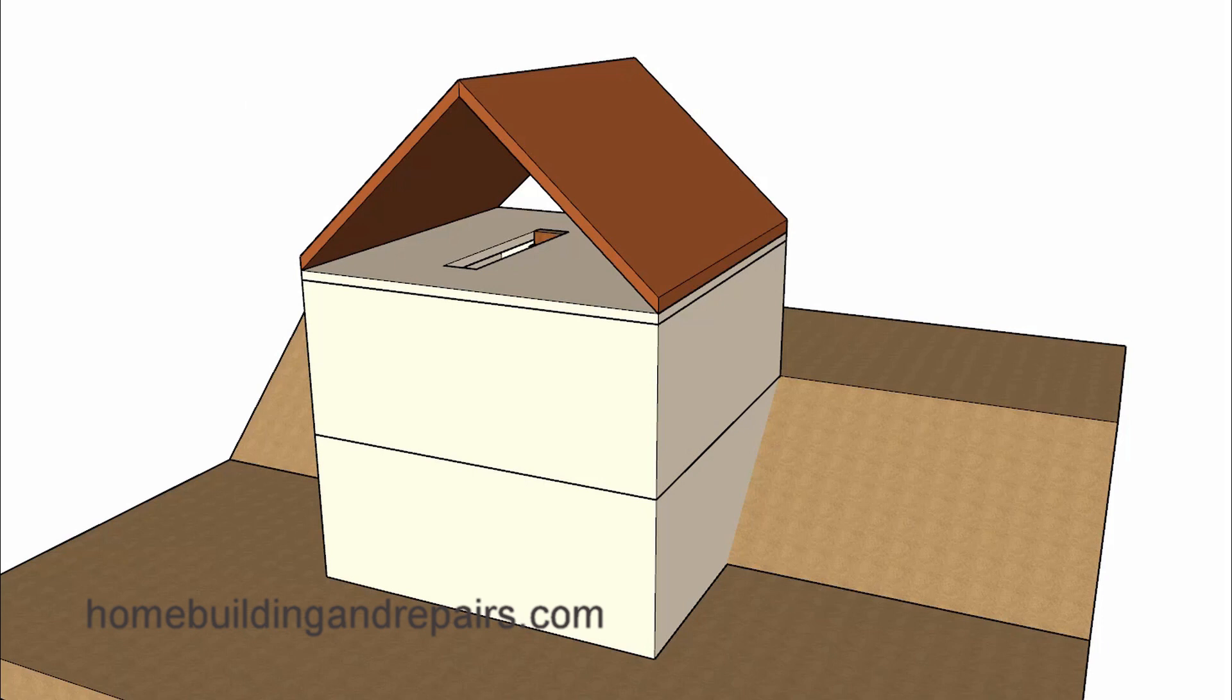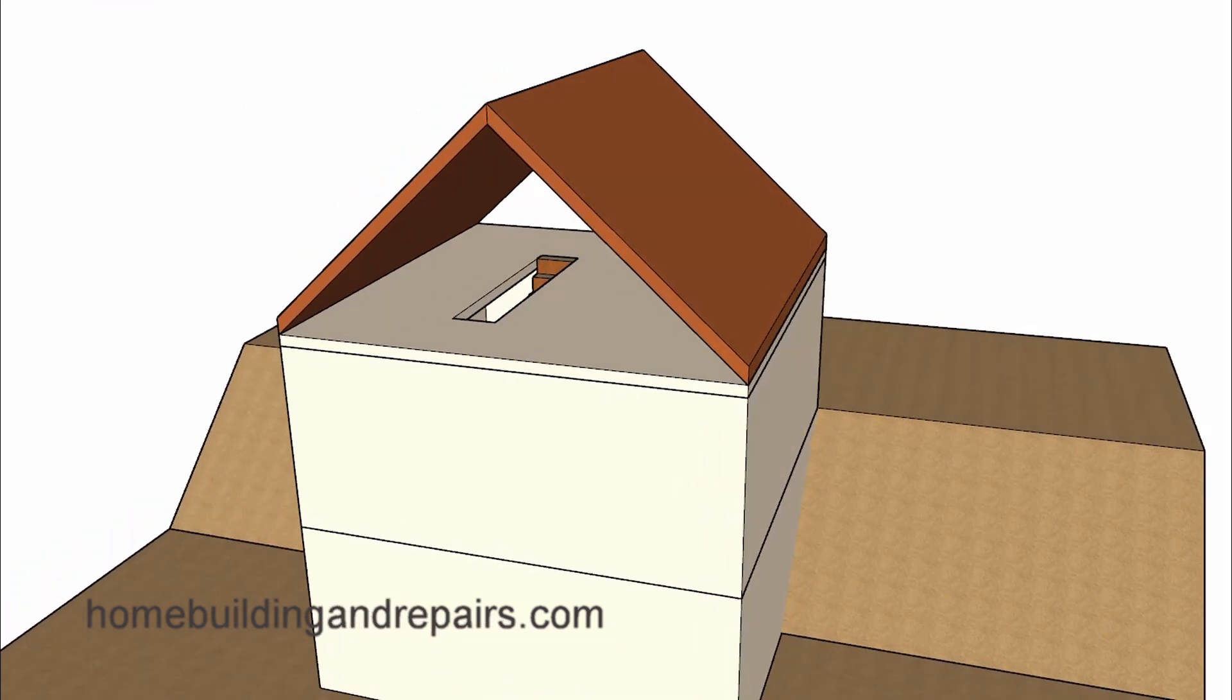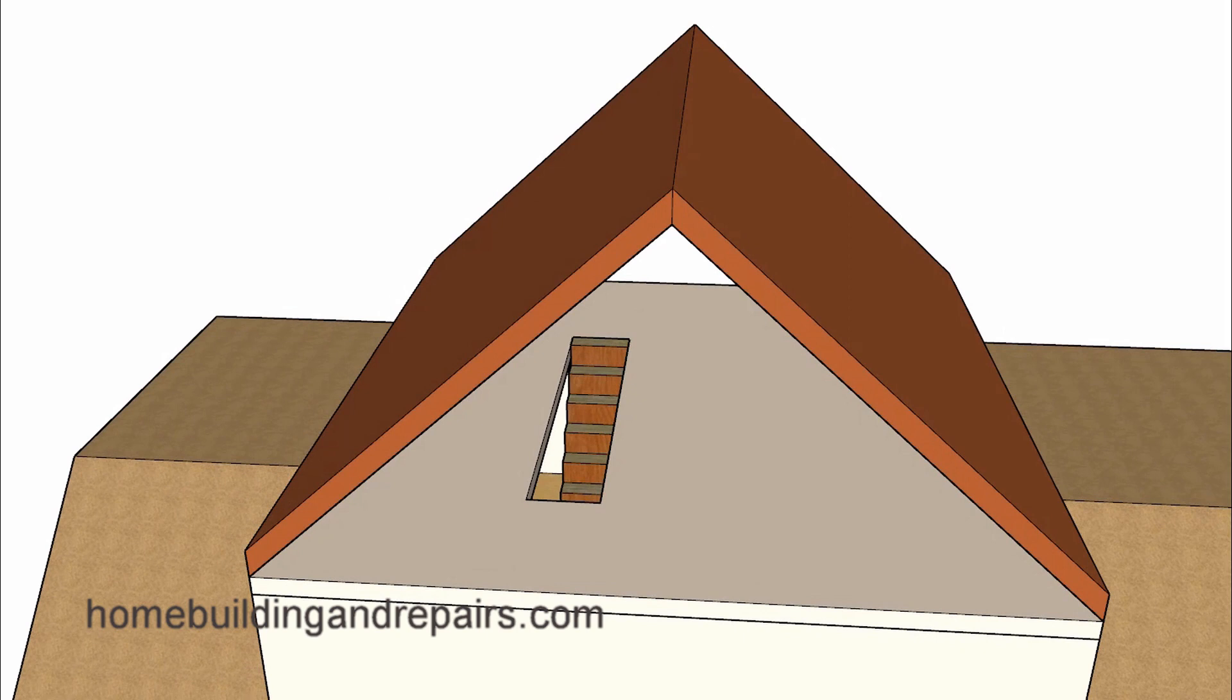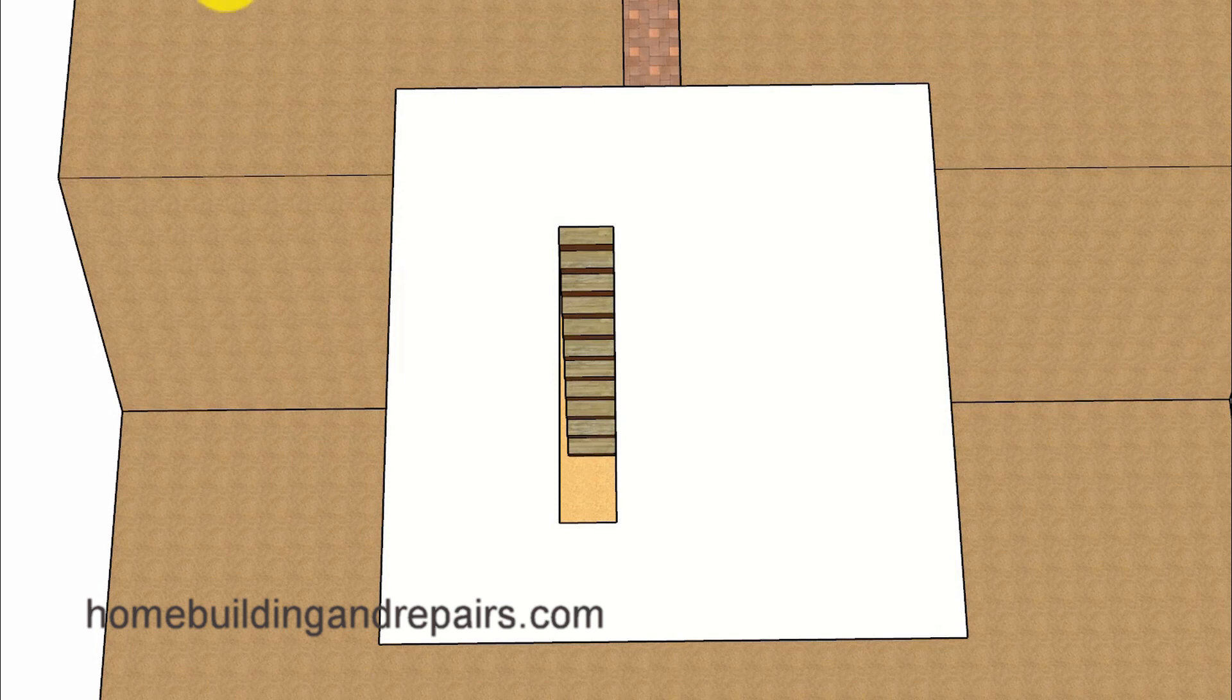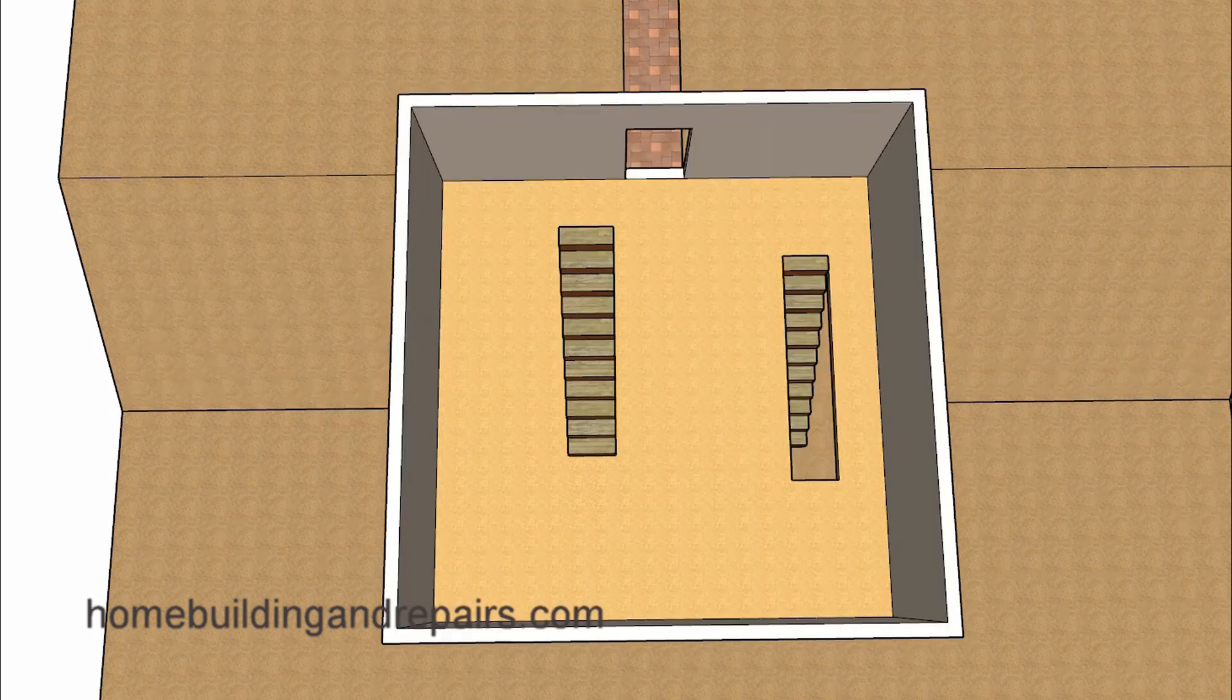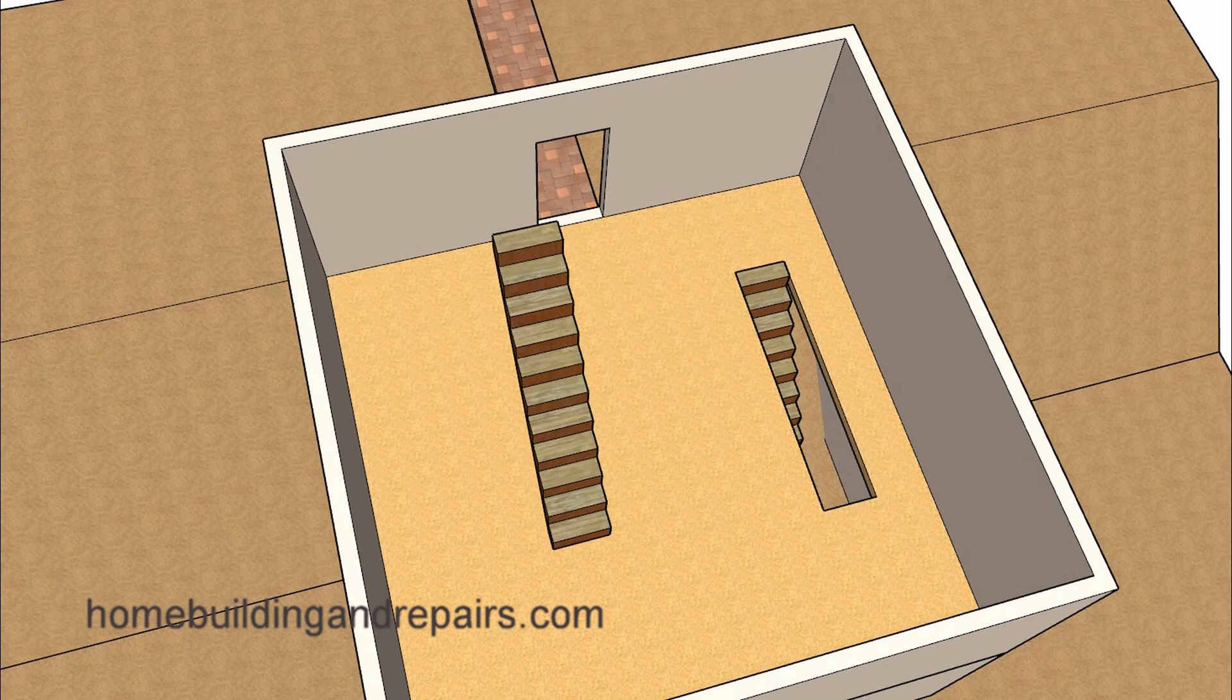If that doesn't make sense, let me provide you with an example of an attic that would not be habitable. A habitable space, according to the definitions in this same book, will be a space in a building for living, sleeping, eating, or cooking. So if you don't have any of those in your attic, then you shouldn't have a problem using a smaller stairway or something with larger risers and smaller steps.